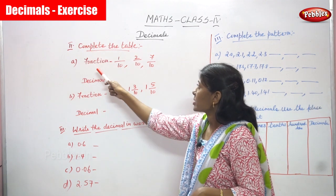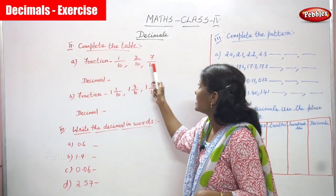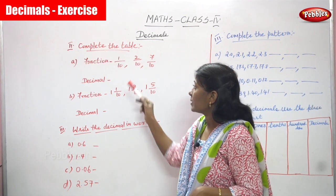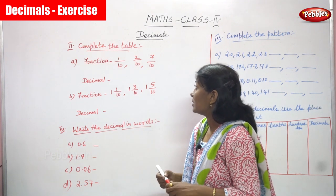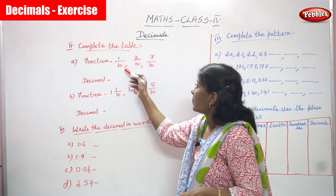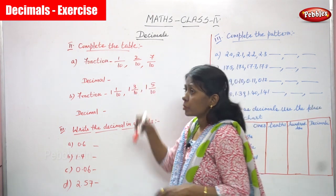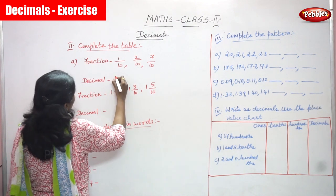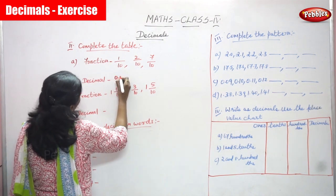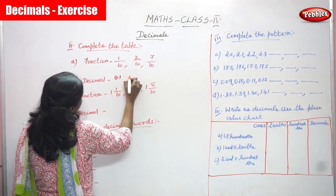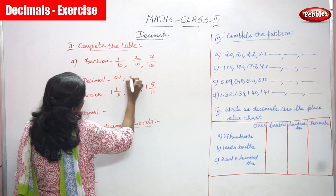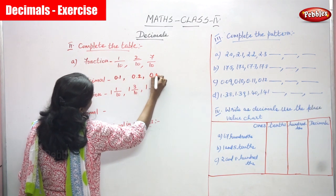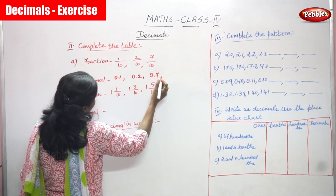The fractions given are 1 by 10, 2 by 10, and 7 by 10. You have to convert them into decimal. So 1 by 10 — you know that the answer is 0.1. Then 0.2, and 0.7.